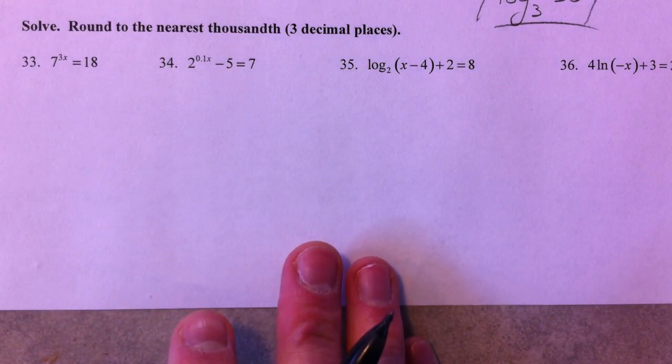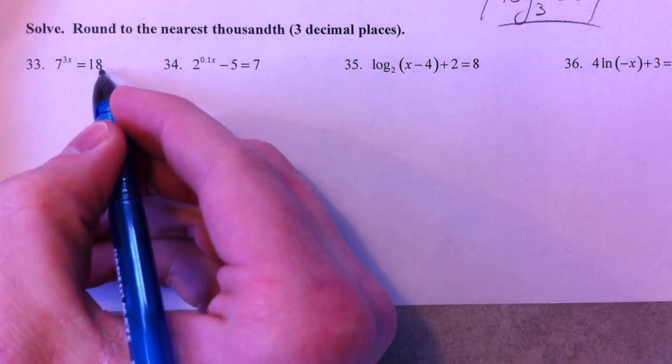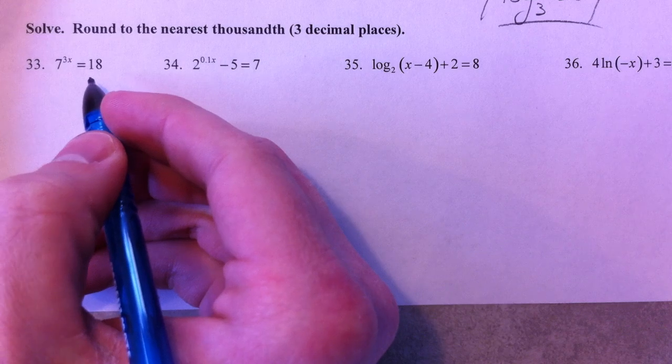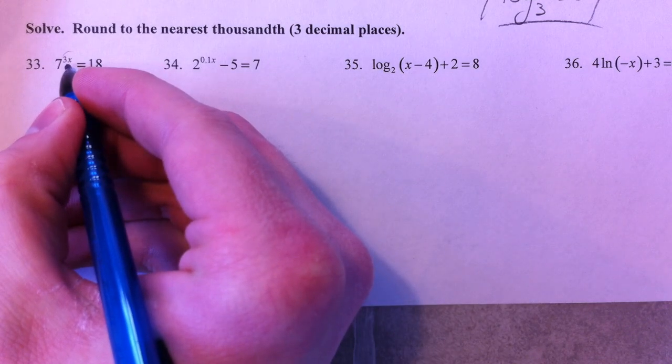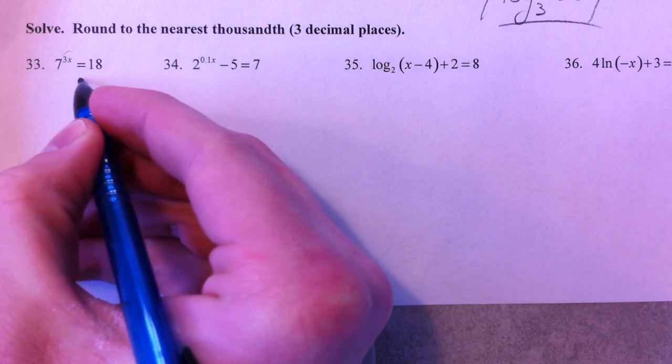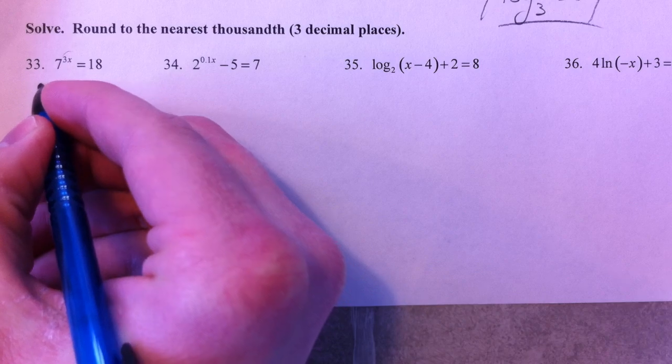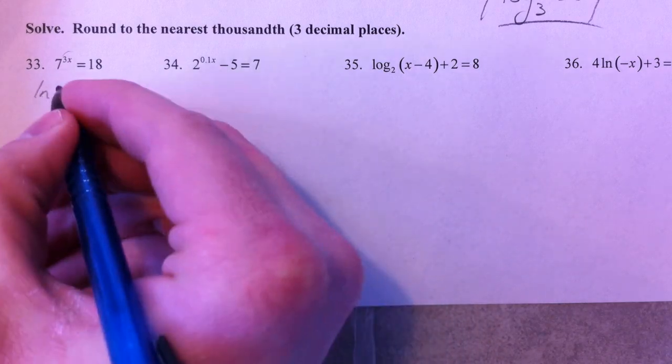We've done some solving already in the story problems. So, 7 to the 3x equals 18. X is stuck in the exponent, and so we can't just divide by 7. We have to take the natural log, or the log, of both sides.